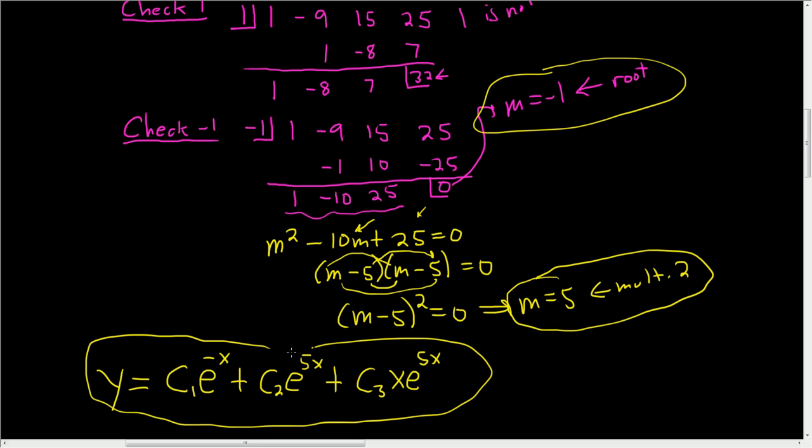So x e to the 5x. That's because it's multiplicity 2. If it was multiplicity 3, then we would have c4 x squared e to the 5x, and so on. So I hope that helps.